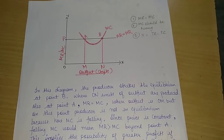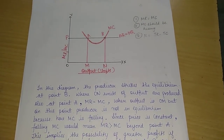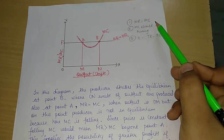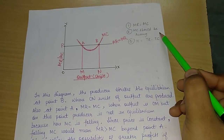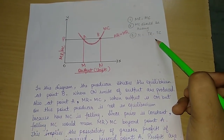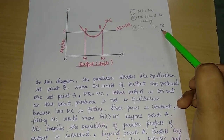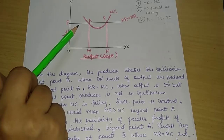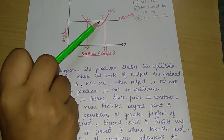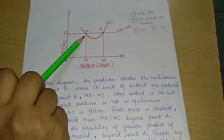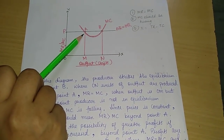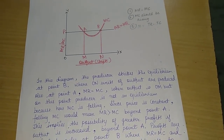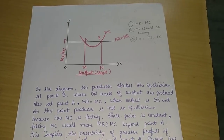For Producer Equilibrium, we had three conditions to satisfy. First, MR and MC should be equal. Second, MC should be rising. Third, profit is TR minus TC. In the diagram, there are two points — Point A and Point B — where MR and MC are equal.